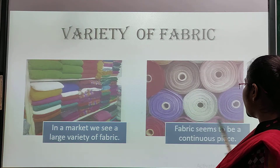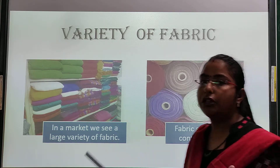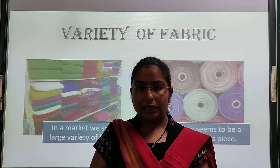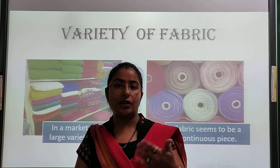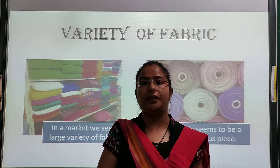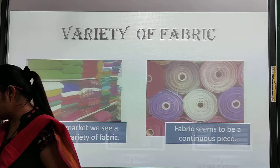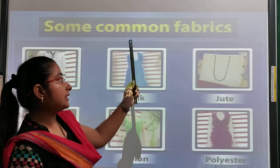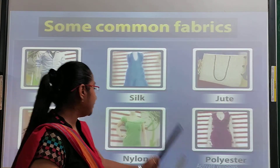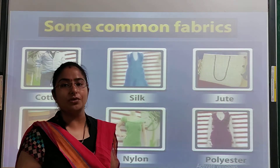Fabric is a continuous piece. If you want to make a shirt, we cut that fabric and from that piece of fabric we make a shirt. So fabric is a continuous piece. Some common fabrics are: cotton, silk, jute, polyester, nylon, and wool. These are the common fabrics which we use in our daily life.